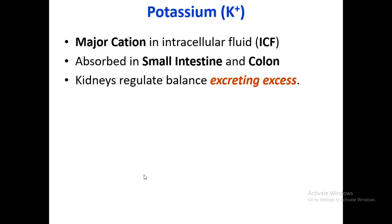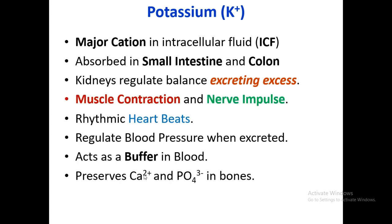Potassium is the major cation in intracellular fluid. It is absorbed in the small intestines and colon, and the kidneys regulate balance by excreting excess. Its functions include muscle contraction, nerve impulse transmission, rhythmic heartbeats, and regulating blood pressure when excreted. Potassium decreases blood pressure — antagonistic to sodium's effect. Potassium is the major intracellular electrolyte.